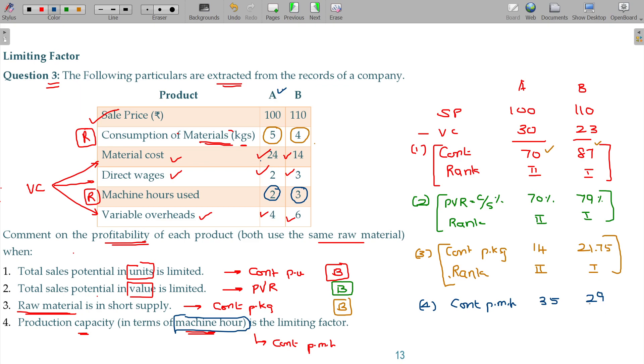For every hour of machine usage, A gives more revenue, so use the machines to manufacture A only. The rank here: A will be the topper and B will be the second topper. So I can recommend A in this case. Clear? Come on, finish up copying this. Thank you.